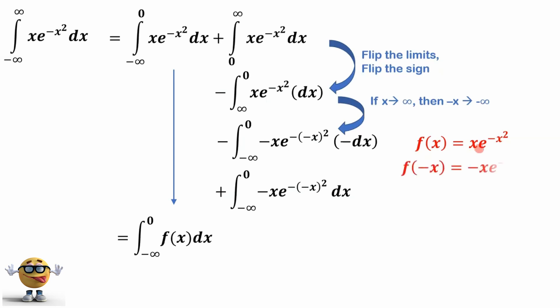x times e to the negative x squared. Well, f of negative x is where we just put negative anywhere there's an x. So negative x times e to the negative negative x squared. This is the same as this right here. So this is now our negative f of negative x. This is just f of negative x.